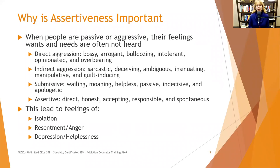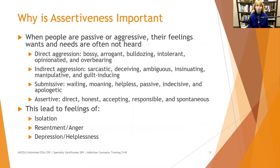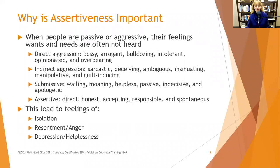Submissiveness can look like wailing, moaning, helpless, passive, indecisive, apologetic, or just not having an opinion about things — saying 'whatever, I don't care, whatever you want.' People do have opinions; sometimes we just don't care about a particular choice, but other times we do have a clear opinion. Assertiveness, by contrast, is direct, honest, accepting, responsible, and can be spontaneous. A great slogan: 'Say what you mean and mean what you say, but don't say it mean.'